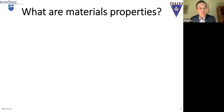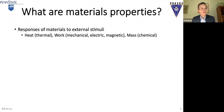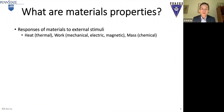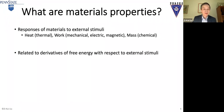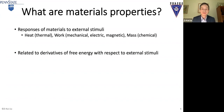Let's think about what materials properties really are. Materials properties represent the responses of a material to external stimuli — for example, heat (thermal), work (mechanical), electrical, magnetic, and chemical. If you think about this, you probably realize that they are related to derivatives of free energy with respect to external variables.